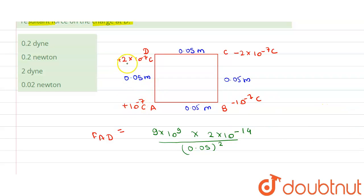So 10^-7 times 2×10^-7, this is 2×10^-14 coulomb. And the direction is this. So this is the value of force.